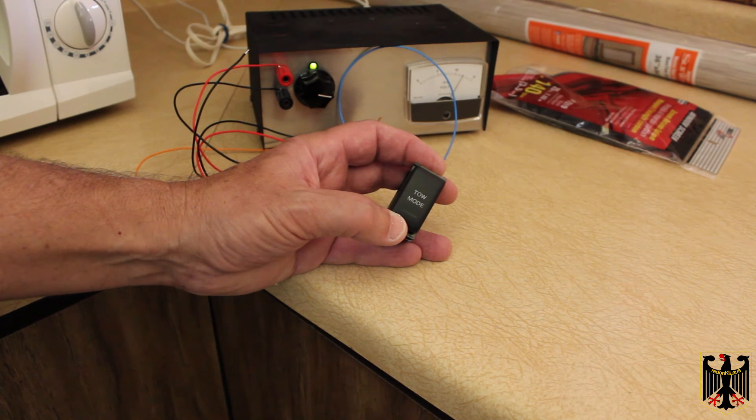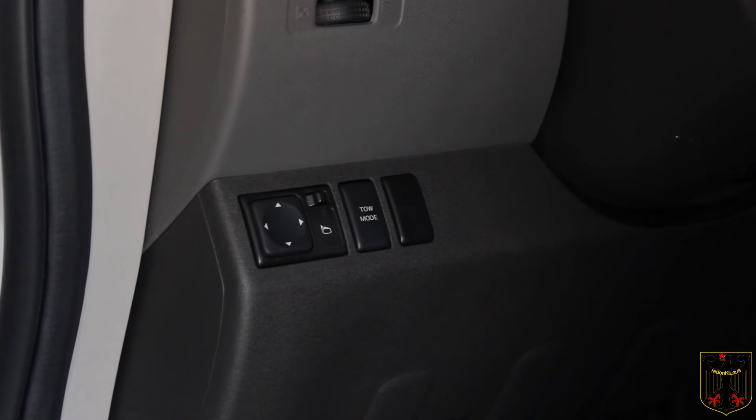Okay, at this point we've installed the tow mode switch to give us a ground over to the Stillen piggyback ECU and so I'm going to demonstrate how that works here in a second.